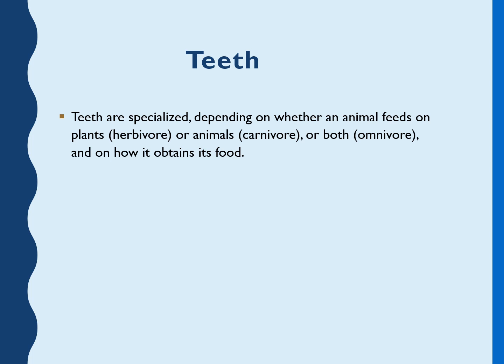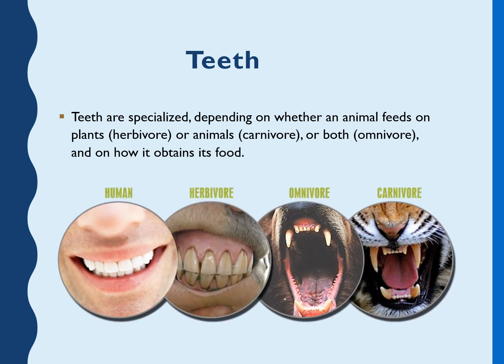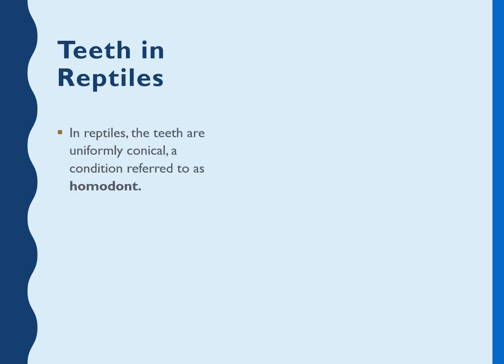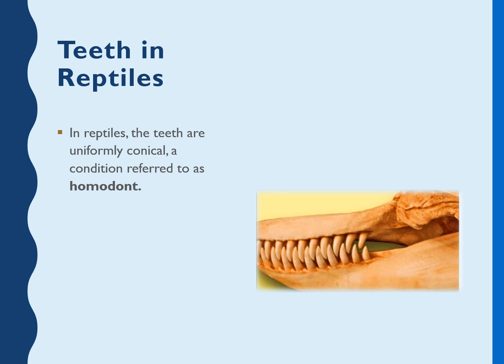Teeth are specialized depending on whether an animal feeds on plants — herbivore — or animals — carnivore — or is omnivorous. In reptiles, the teeth are uniformly conical. This condition is called homodont — all teeth are of the same uniform conical shape.